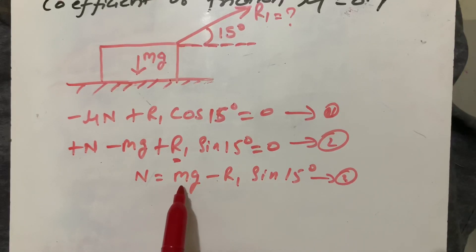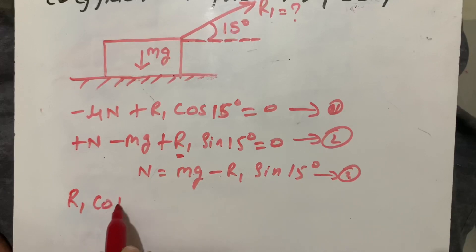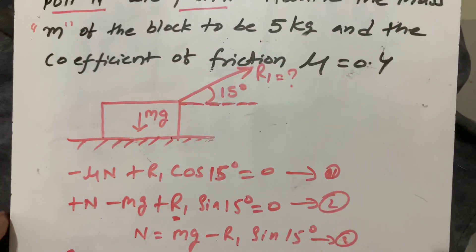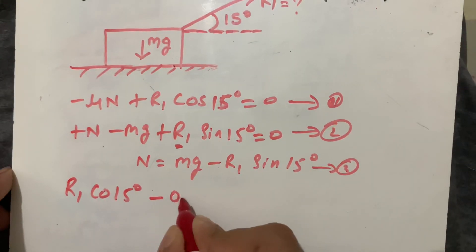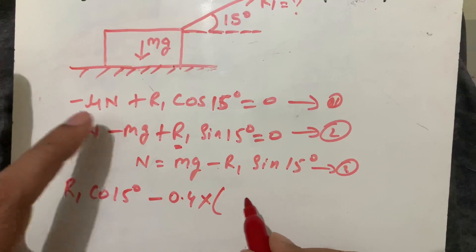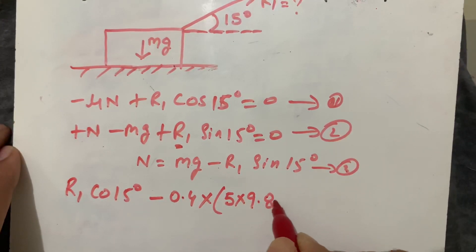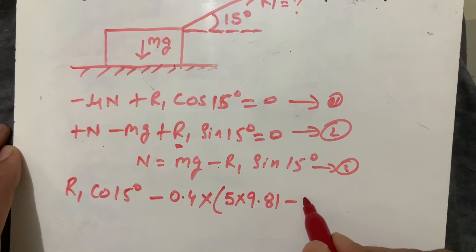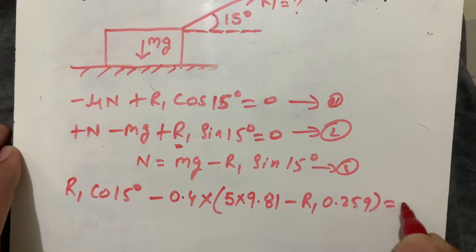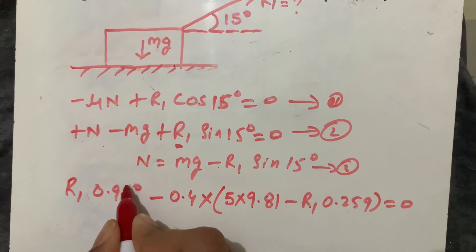Substituting the value N = mg - R1 sin 15° into equation one: R1 cos 15° - 0.4 × (5 × 9.81 - R1 sin 15°) = 0. The value of sin 15° is 0.259 and cos 15° is 0.966.